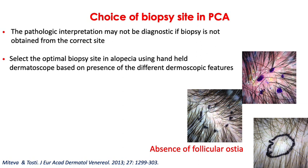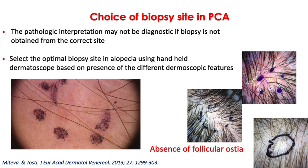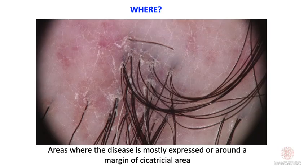When you suspect cicatricial alopecia, it is advised to perform a skin biopsy. It is important to select the right site, because if you take an area that is already fully scarred, it is impossible to identify the typical infiltrate. In frontal fibrosing alopecia, you should biopsy where the typical activity of the disease is most expressed.